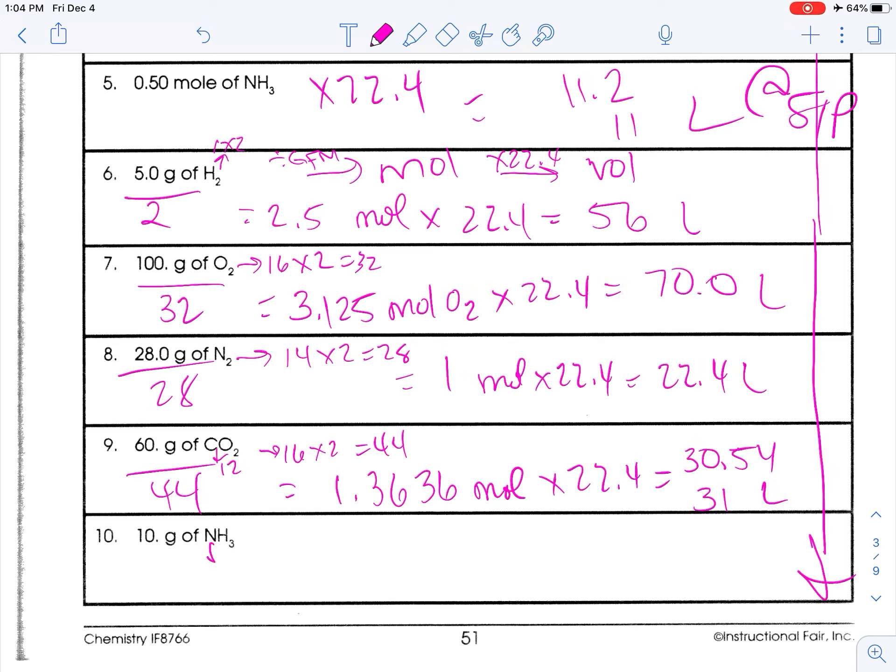And, then this is 14, and this is three. But, there are three of them. So, that's a GFM of 17 grams per mole. So, 10 divided by 17 is .5882 whatever moles multiplied by 22.4. Hold on. Did I do that right? 10 divided by 17. Yep. Times 22.4. Okay. We need two sig figs. So, my calculator says 13.176. To two sig figs, that's simply 13 liters. Okay.